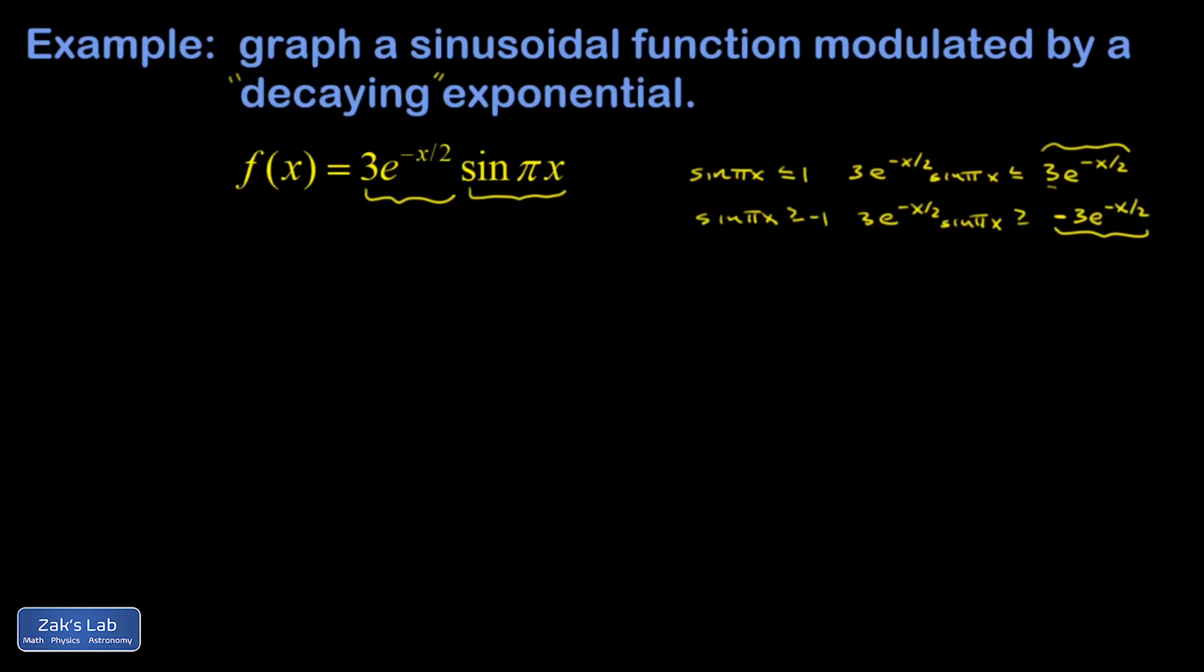So if I think about my original sine function, all those moments where it's equal to 1, the tops of all those hills, they're going to touch this upper curve. So I'll call that the upper bound. And then the bottoms of all the valleys of the sine function are going to touch this lower curve. I'll call it the lower bound.